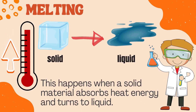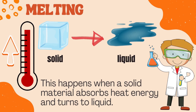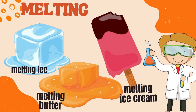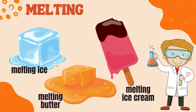Melting turns solid to liquid. This happens when a solid material absorbs heat energy and turns to liquid. Examples are melting ice, melting butter, and melting ice cream.